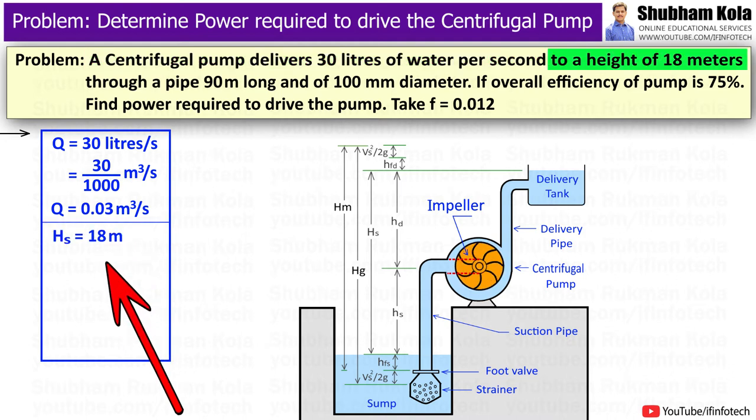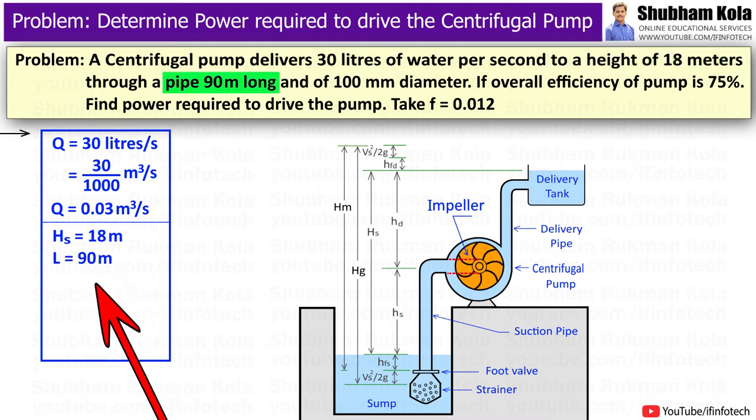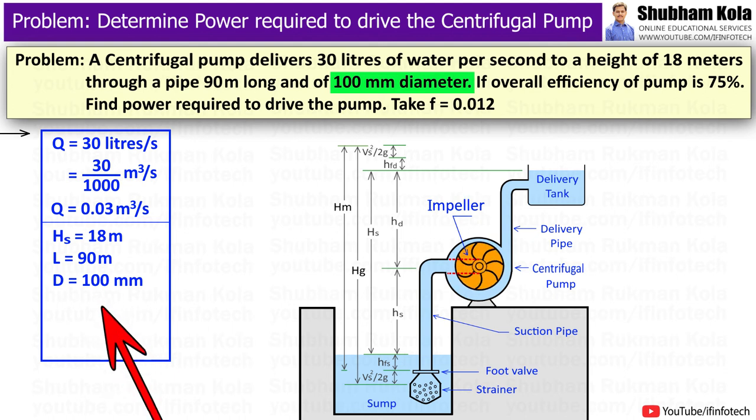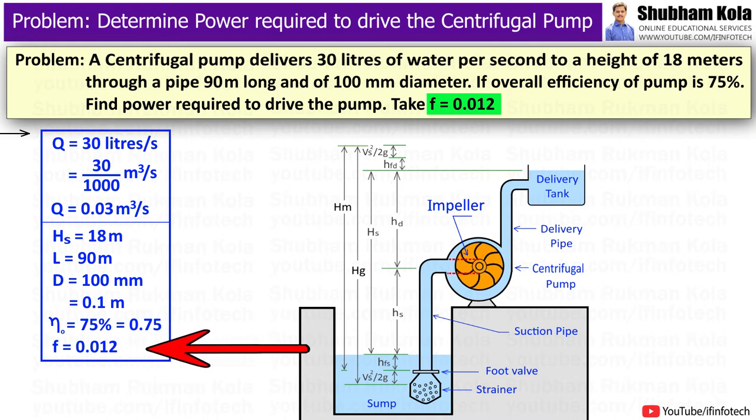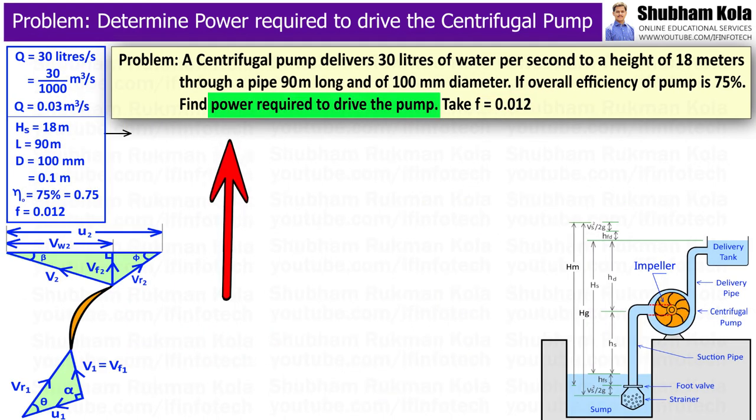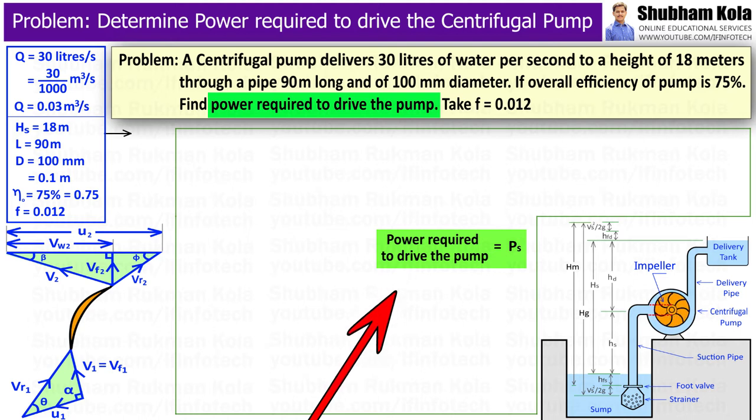The static head Hs is given as 18 metre, length of pipe L equal to 90 metre, and diameter of pipe D is 100 mm, i.e. 0.1 metre. Overall efficiency is provided as 75%, i.e. 0.75, and friction factor f equal to 0.012. And we want to calculate the power required to drive the pump.